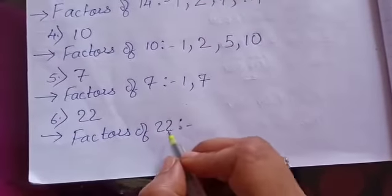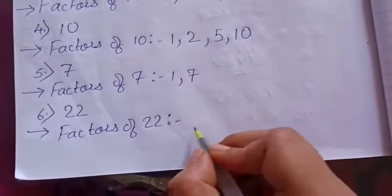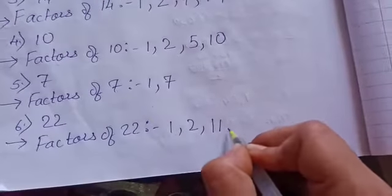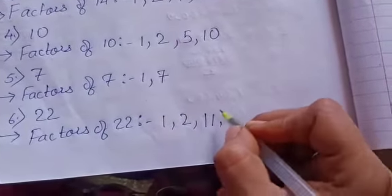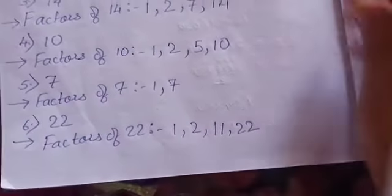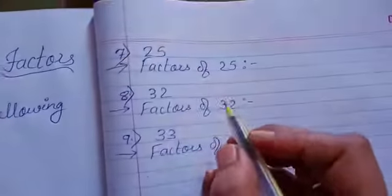Now 22, factor of 22: 1, 2, 11, and 22 itself.